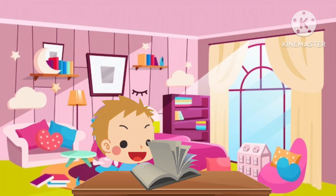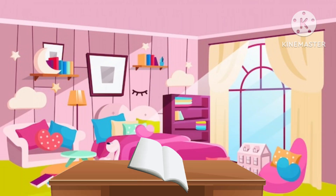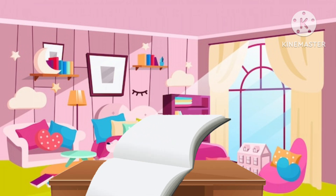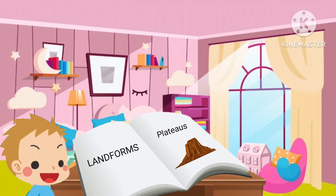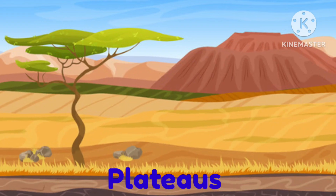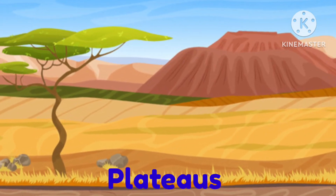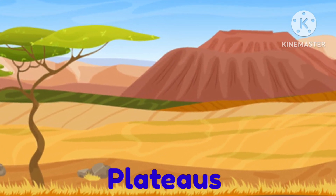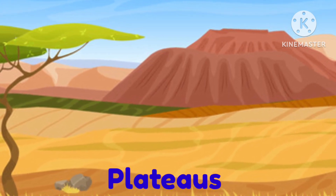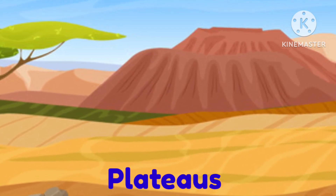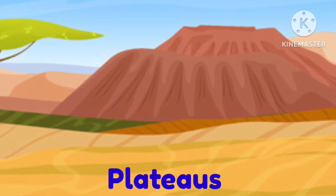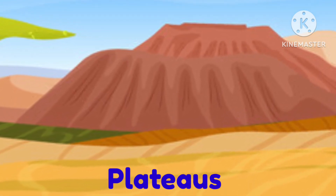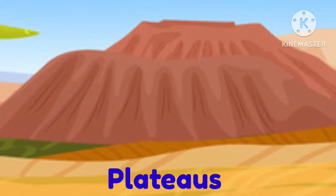Yes, here it is. Earth has different landforms, and this flat surface is called a plateau. Plateaus are also major landforms of the earth — flat land standing high above the surrounding land. Plateaus have one or more sides with steep slopes, and their height varies from each other.